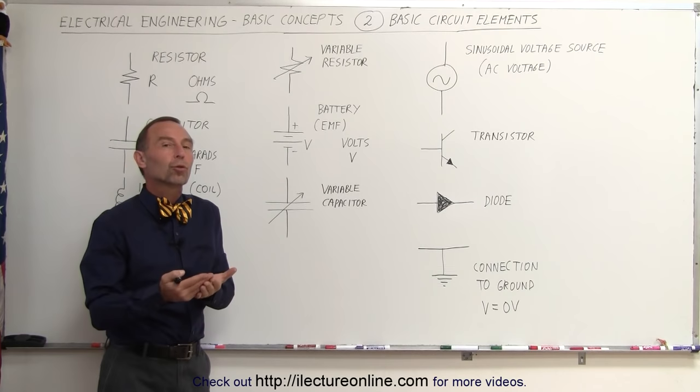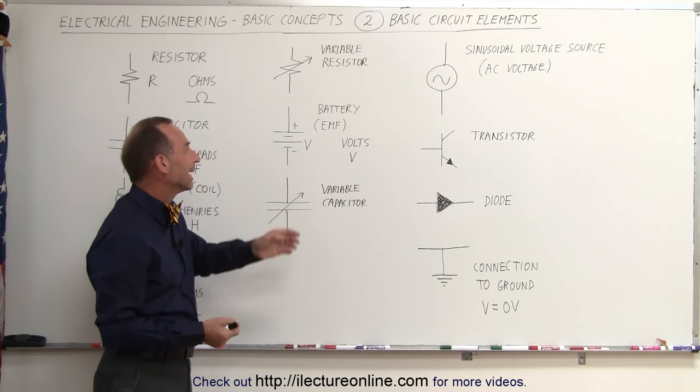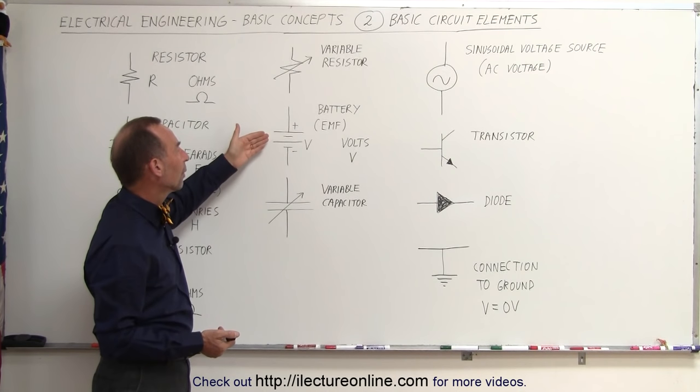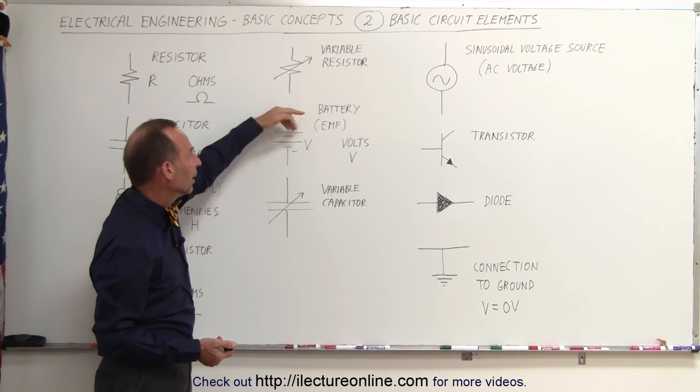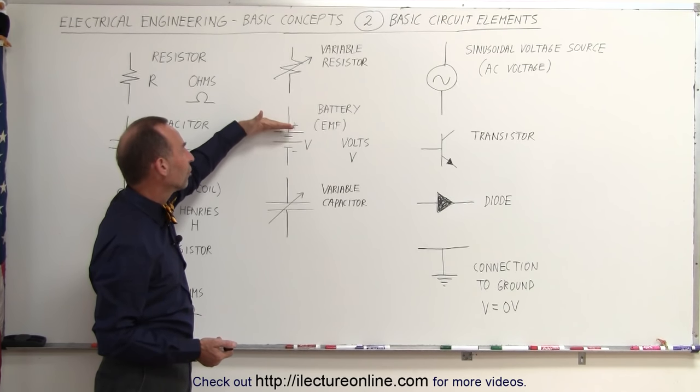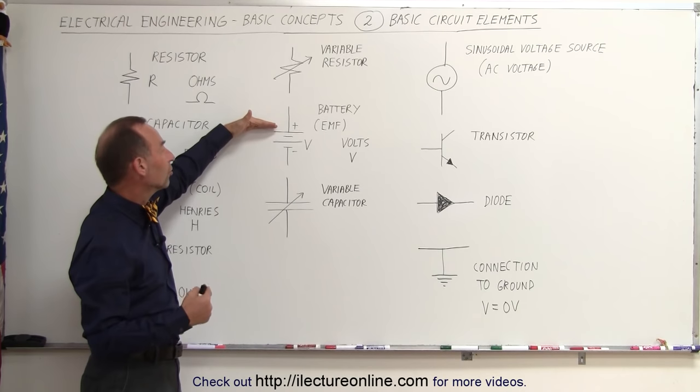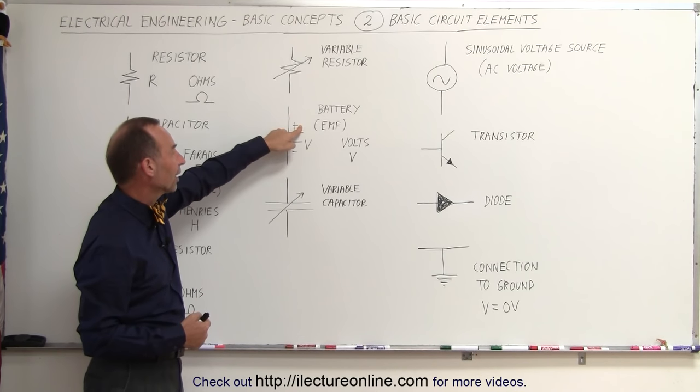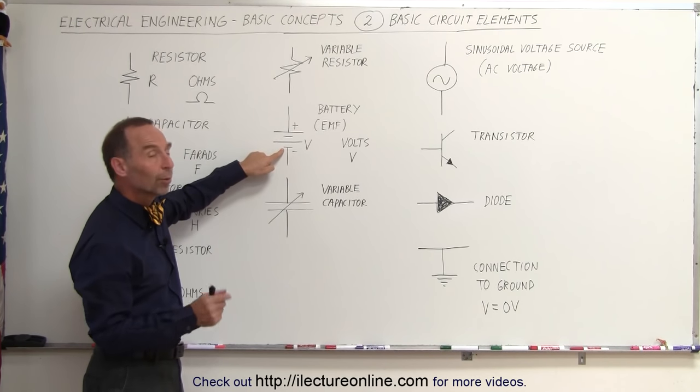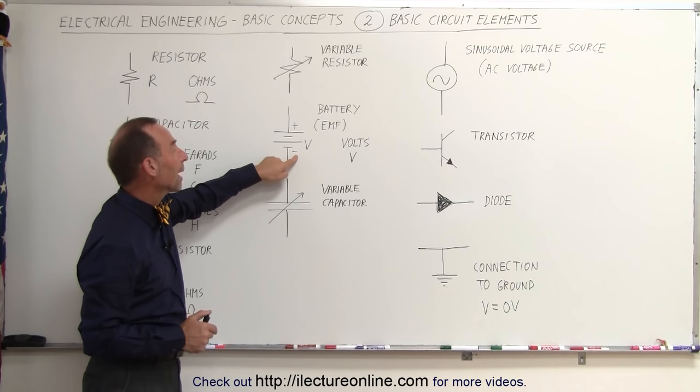We also need to have power sources, or voltage sources. In this case, we have what we've drawn here, a battery. A battery is a series of lines, long and short lines. Where the long side starts, that's where the positive side of the battery is. Where the battery ends with the short line, that's where the negative end of the battery is.